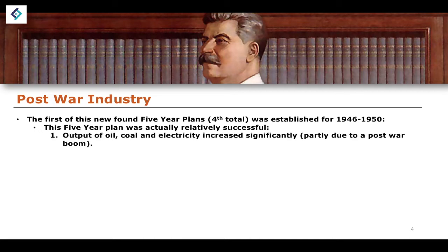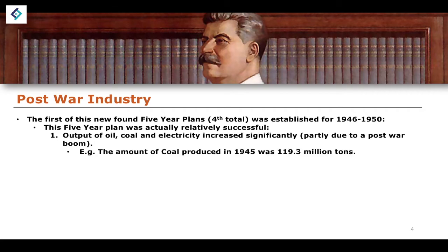This plan was actually relatively successful in terms of its output. Output of oil, coal, and electricity increased significantly. This is partly due to the policies implemented and partly due to the fact that countries generally experience a post-war boom after finishing a conflict, particularly when they win. For example, coal production in 1945 was 119 million tons, rising by 1950, by the end of the first post-war five-year plan, to 261 million tons — a quite significant increase.